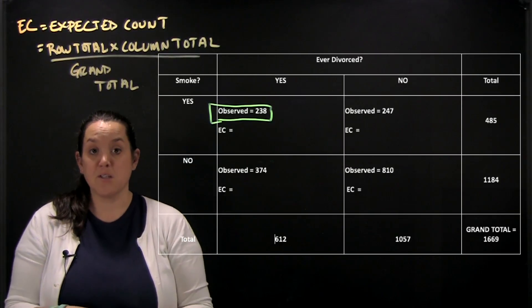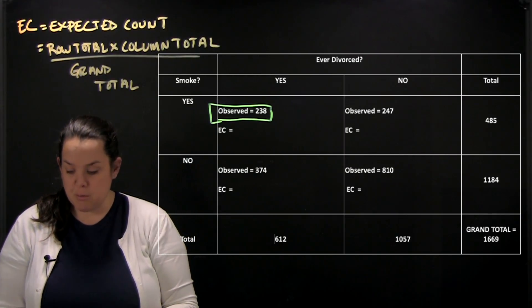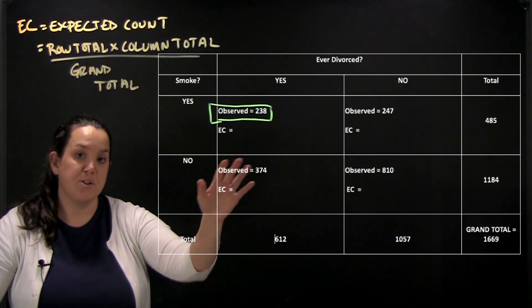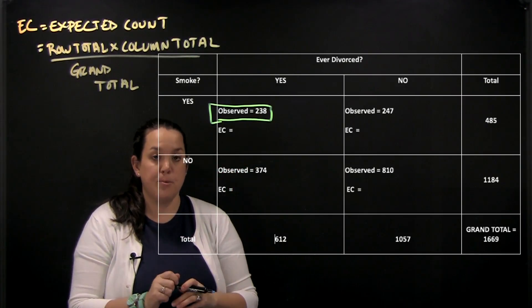So that's how an expected count is calculated and we're going to practice doing that for each of the cells represented in this contingency table.